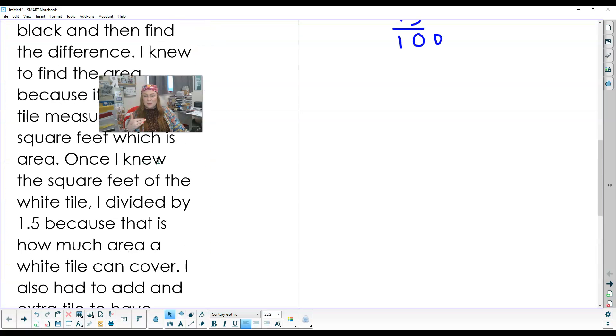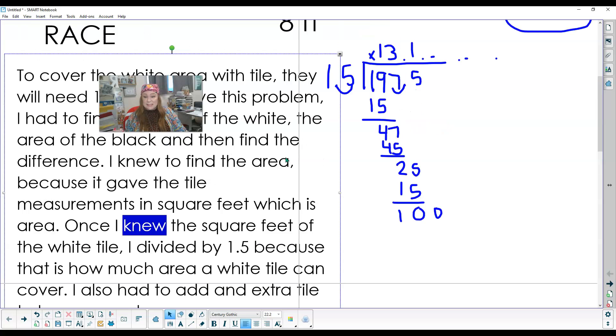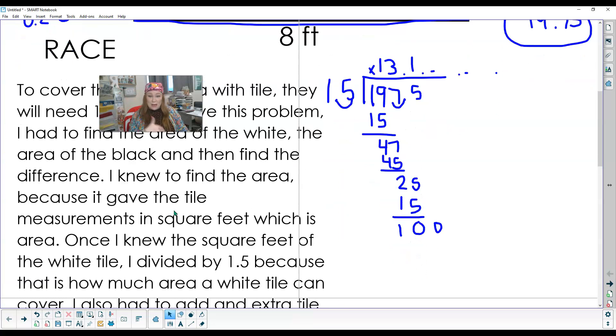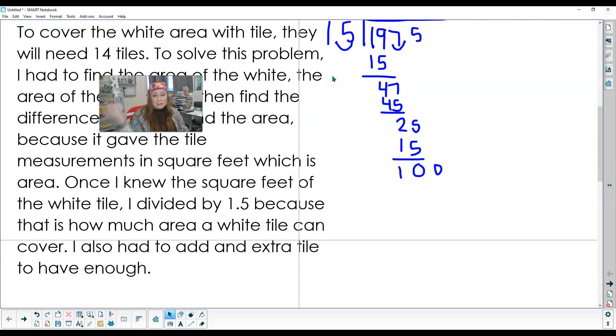So I went through and just explained what I did there. R is easy, restate the question. A, answer the question. C, you are citing how did you know what to do, tell them what you did. E, that's proof, evidence of what you did. Let's go ahead and try one of these out using the RACE response.